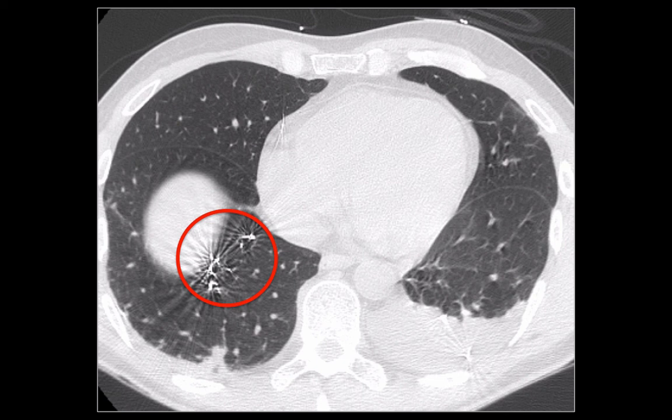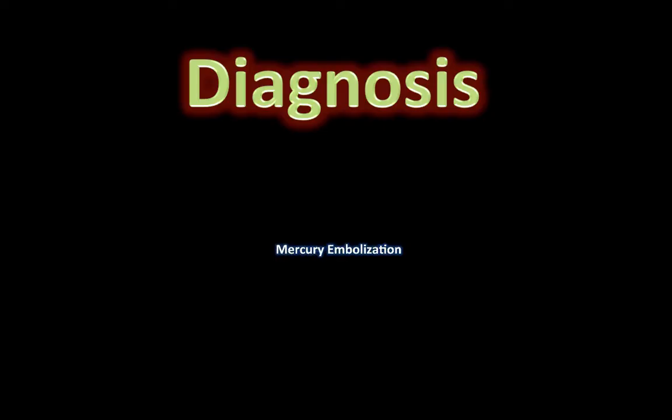This is the CT of the same patient confirming the abnormality as high-dense material seen in the lower lungs. Note the streak-like artifacts that are typically associated with the metallic density. This concludes the diagnosis as mercury embolization.